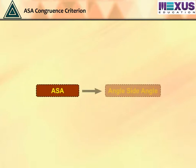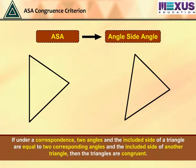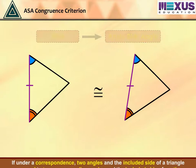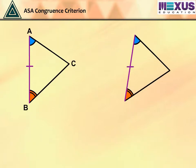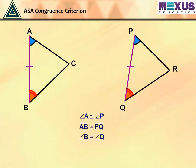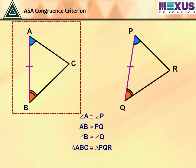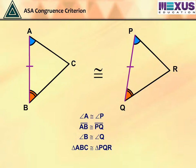The third criterion is ASA, that is, angle-side-angle criterion. It states that if, under a correspondence, two angles and the included side of a triangle are equal to two corresponding angles and the included side of another triangle, then the triangles are congruent. For given triangle ABC and triangle PQR, angle A is equal to angle P, side AB is equal to side PQ, and angle B is equal to angle Q. Therefore, by applying ASA criterion, we can say that triangle ABC is congruent to triangle PQR, as two corresponding angles and included sides of both triangles are congruent.